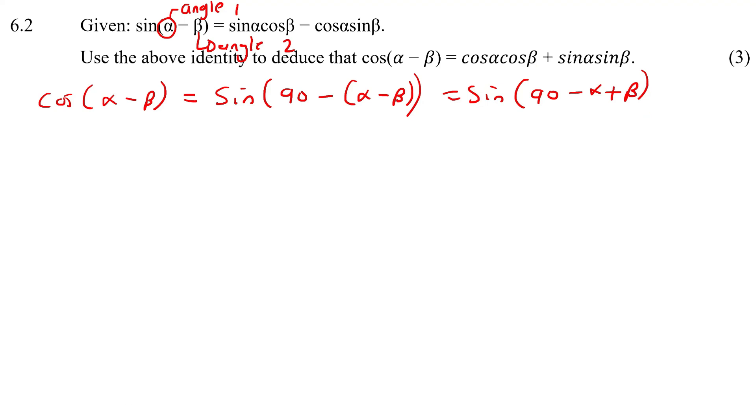What I could do is write this as 90 + β. That's going to be my first angle. What I need to put in a bracket and then minus that. So I'm going to use this as my angle 1, and I'm going to use this as my angle 2. And now I'm going to go use this rule.